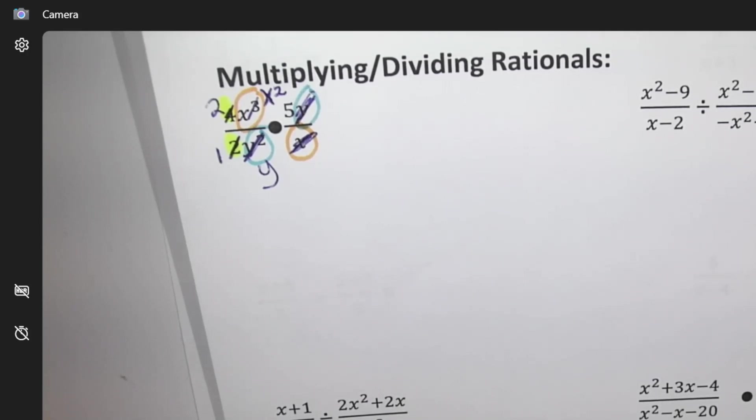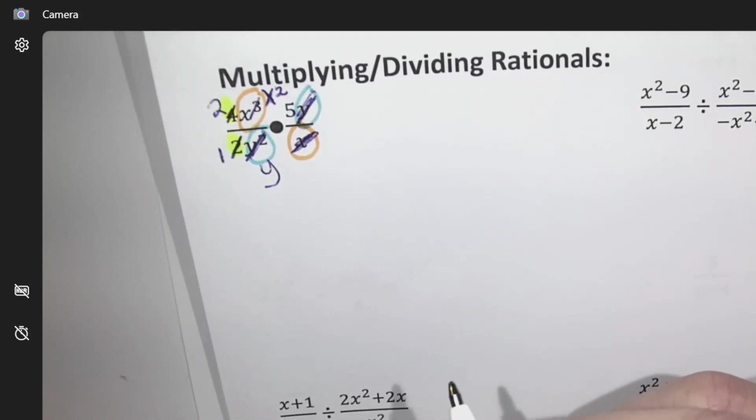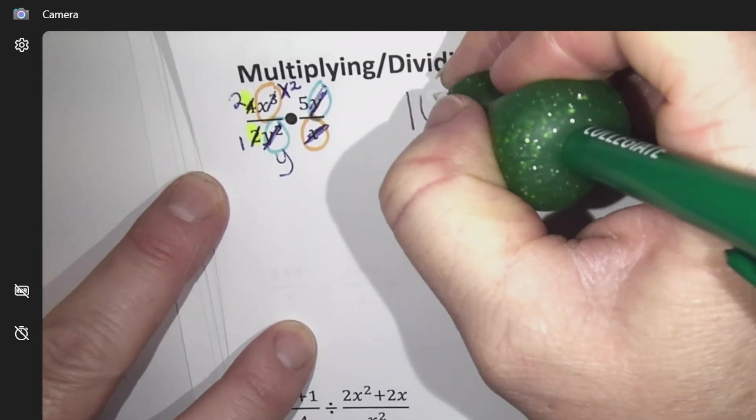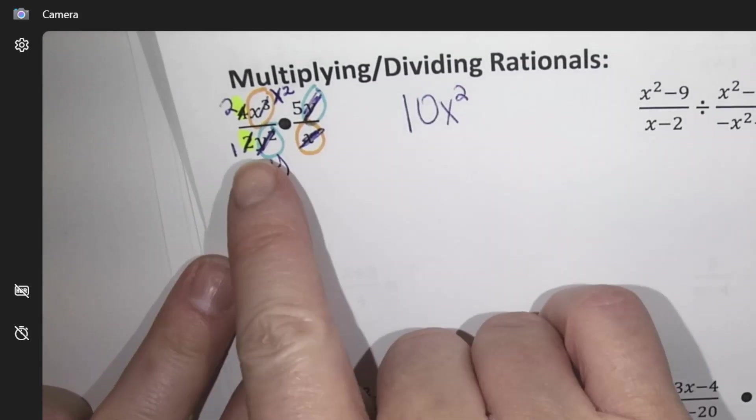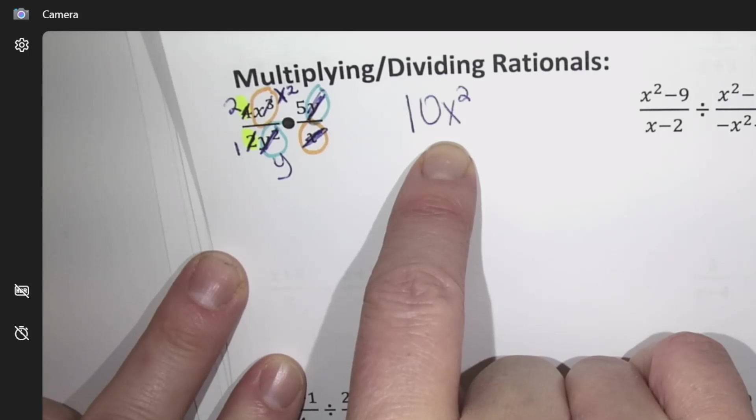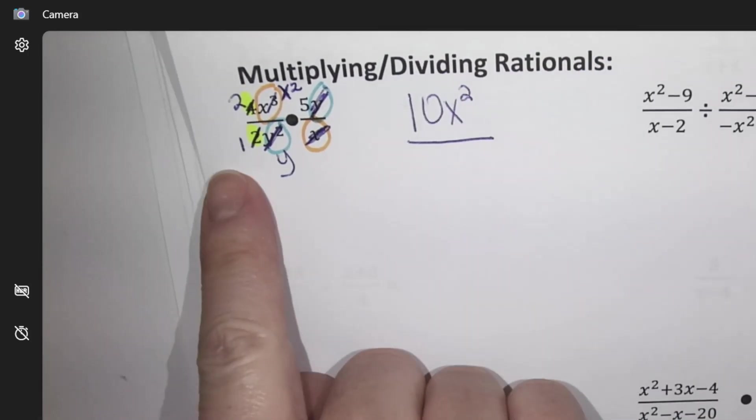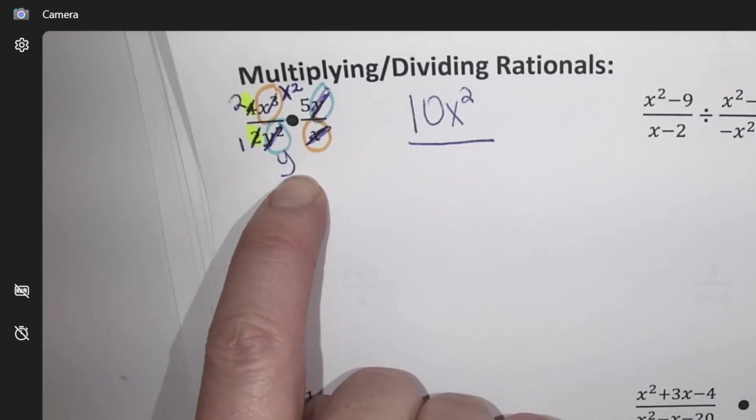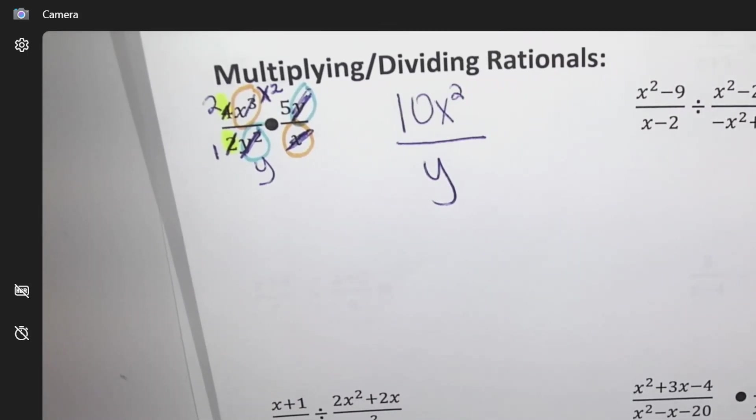So what am I left with? On the top, two times x squared times five - that's what I'm left with - so 10x squared. Two x squared and five made 10x squared. And on the bottom that cancelled, y and that cancelled, so just the y. So you're just looking for cancellations.